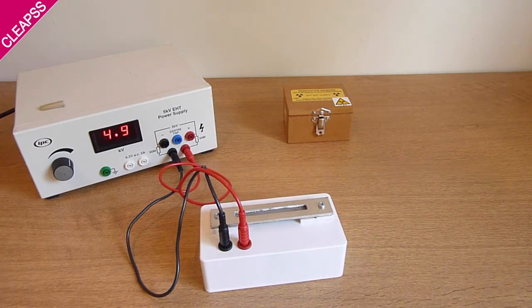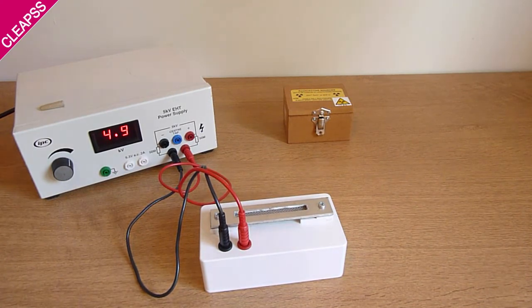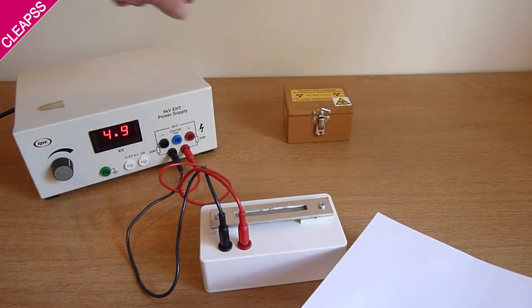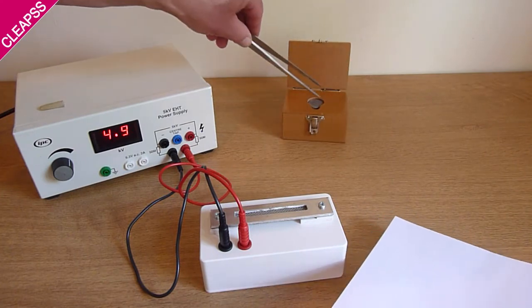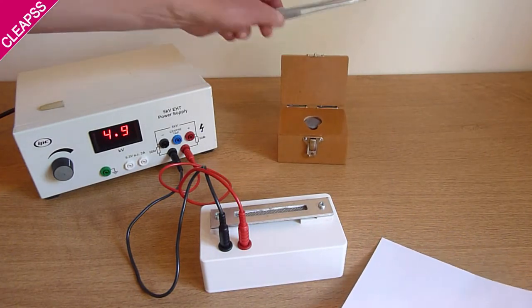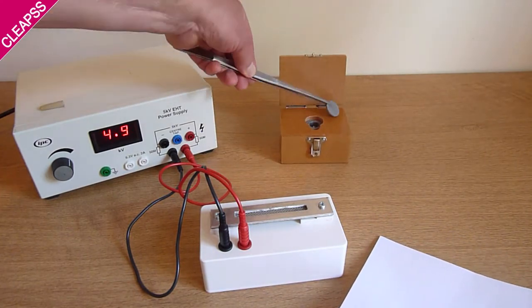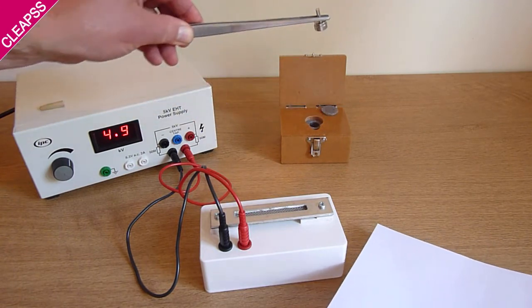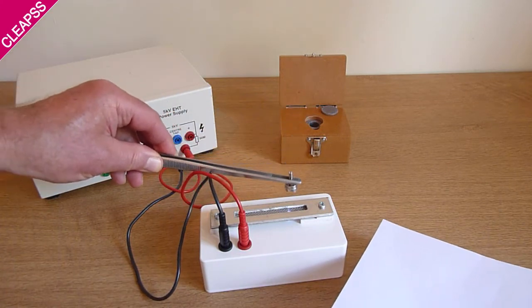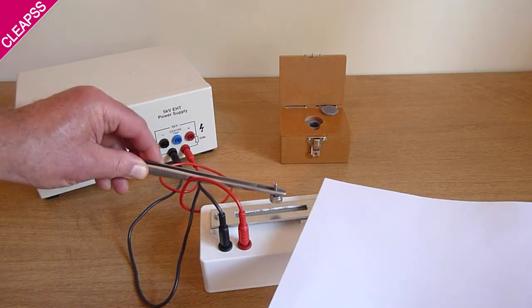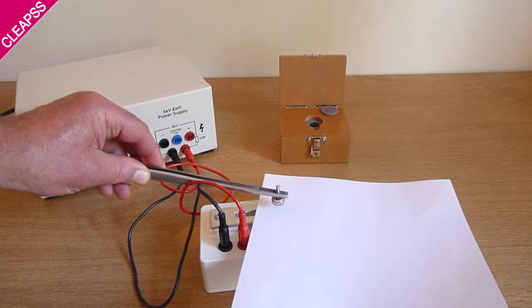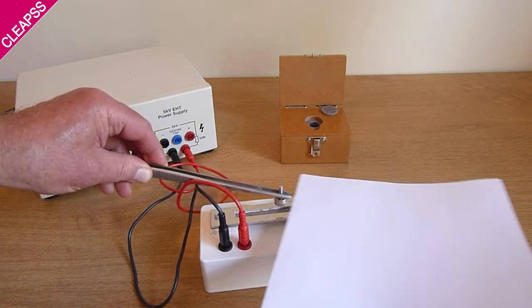And now I'm going to demonstrate the blocking of alpha radiation using a sheet of paper. I'll hold the paper here. Again, take the source out of the pot, reposition, bring the source to the spark counter. It's a very simple and very effective demonstration.